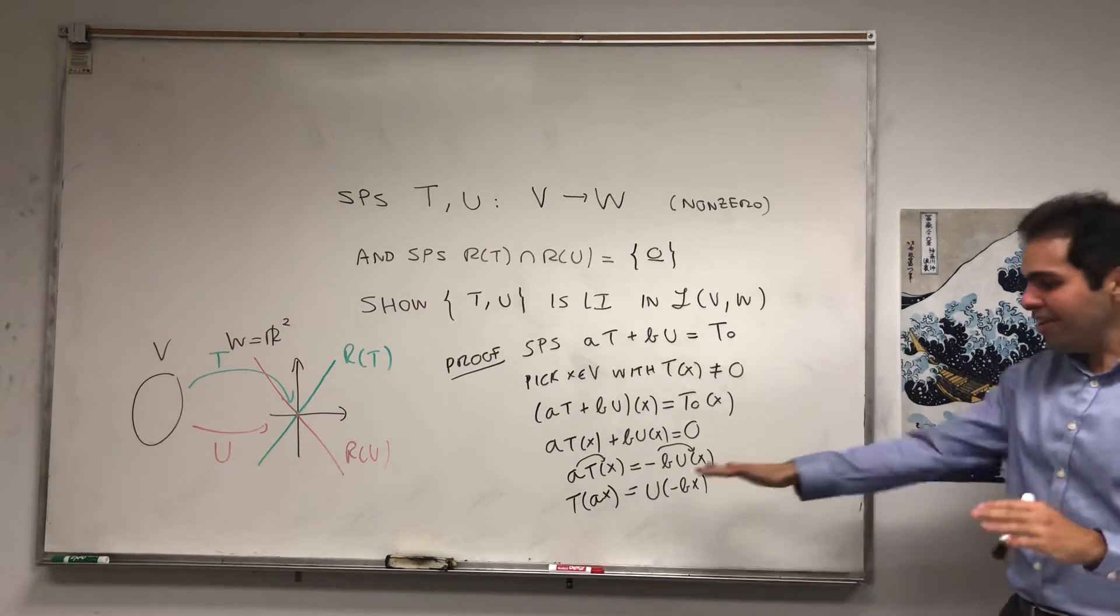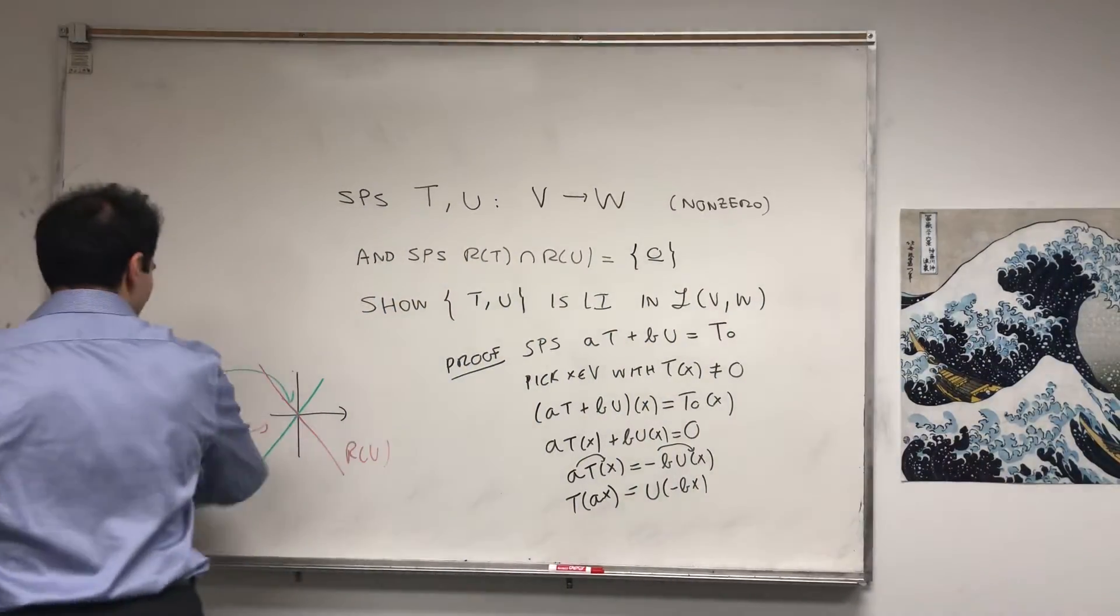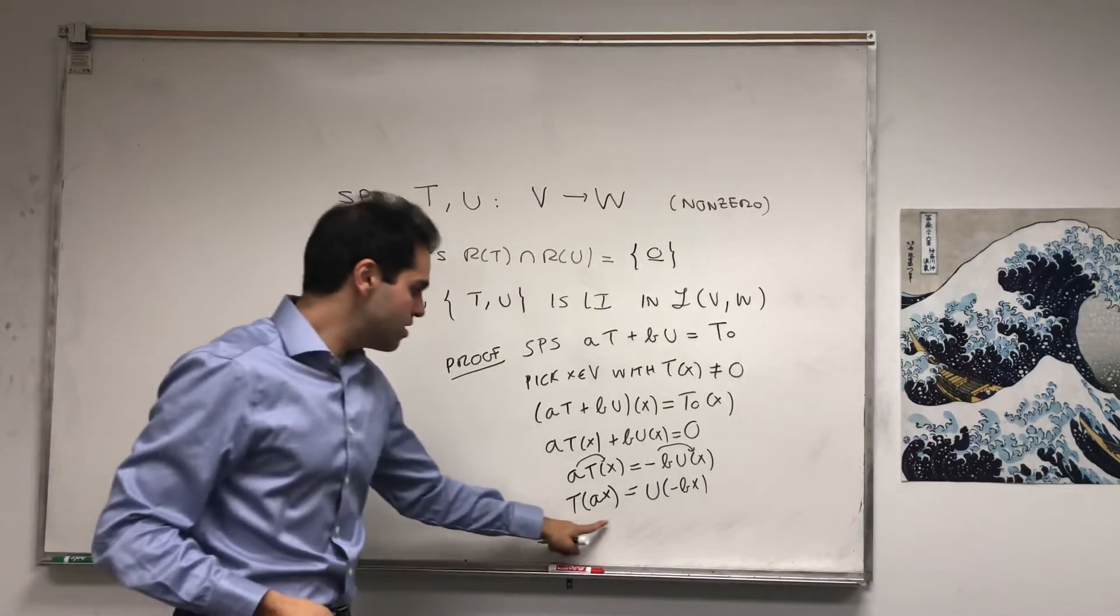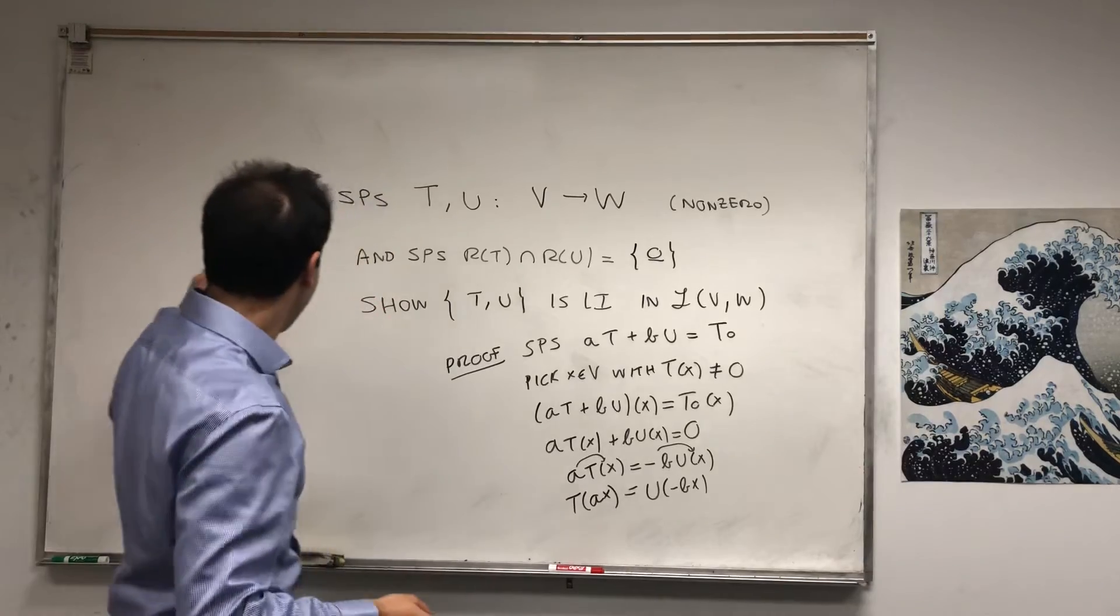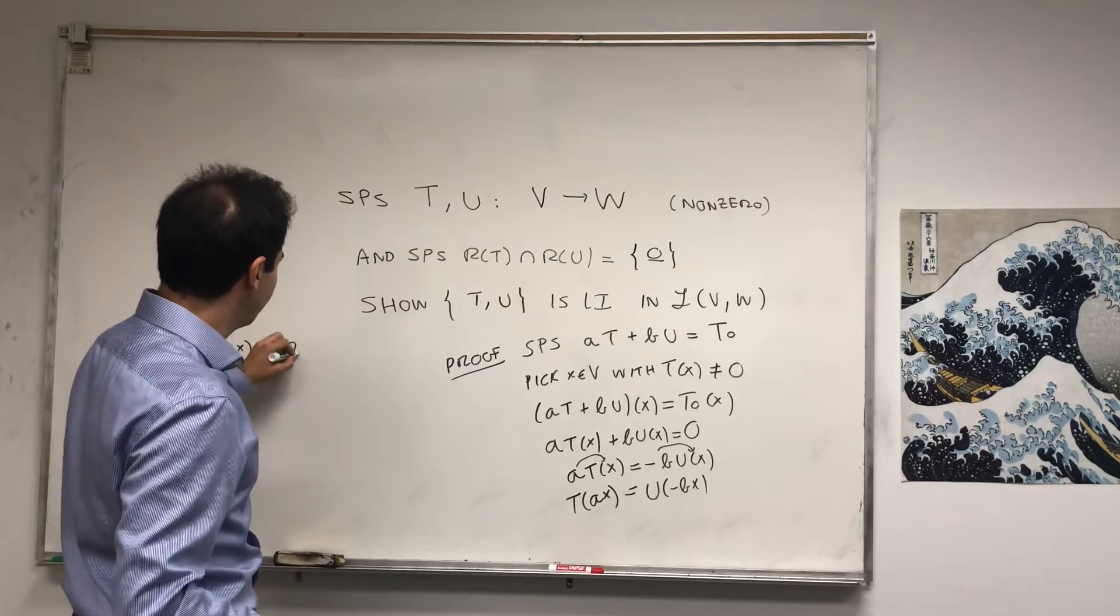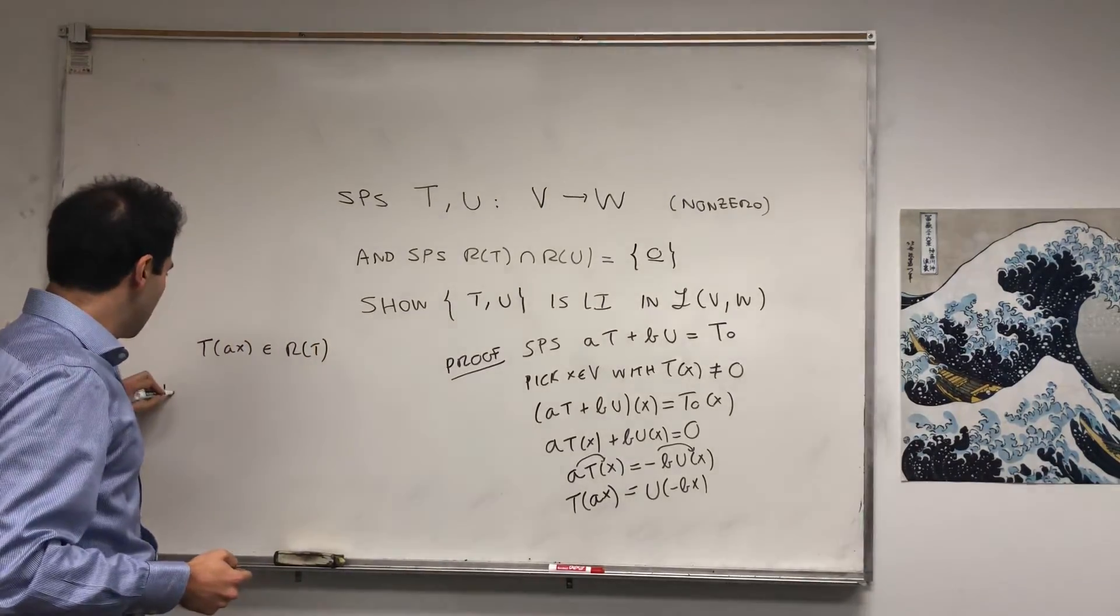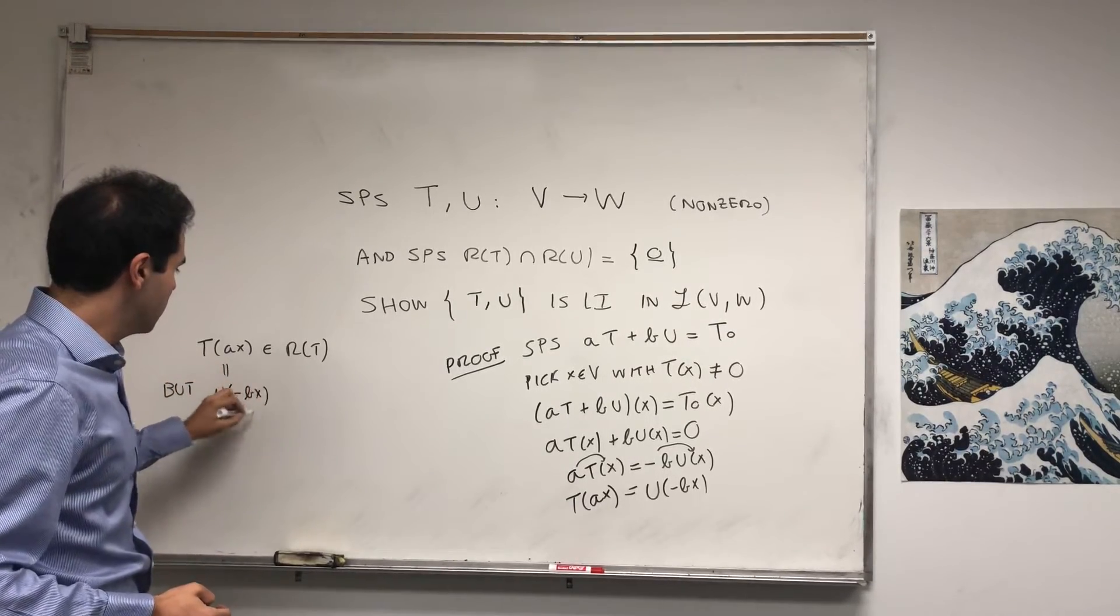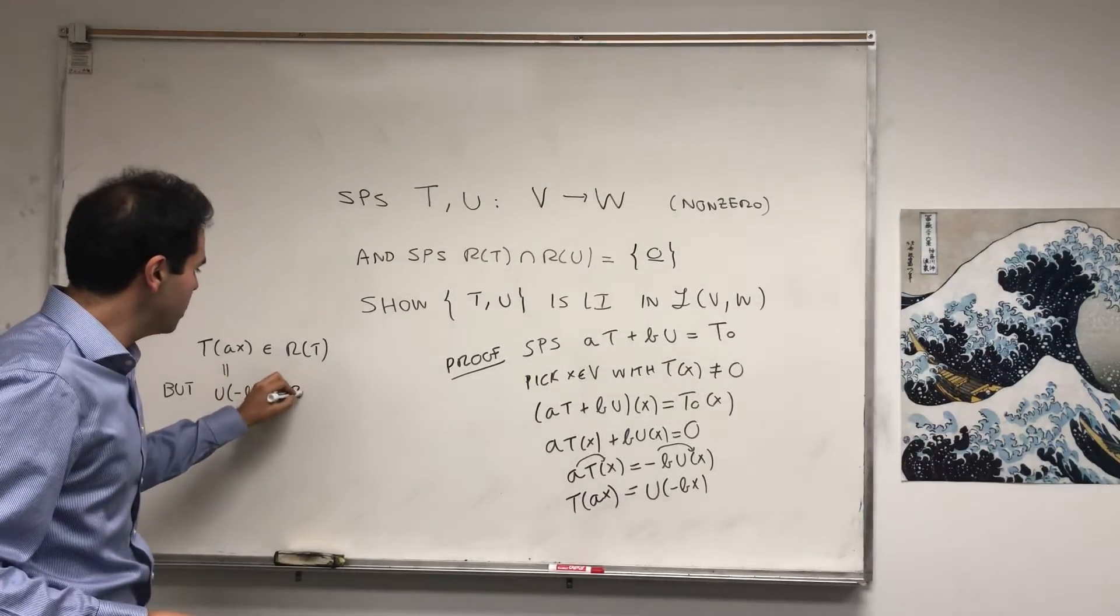And now notice, this is another really cute trick that's very popular in linear algebra. Because well, this thing is of the form T of something, so T of AX, that is in the range of T just by definition of the range of T. But this equals U of minus BX. This is also the form U of something, so it's in the range of U.